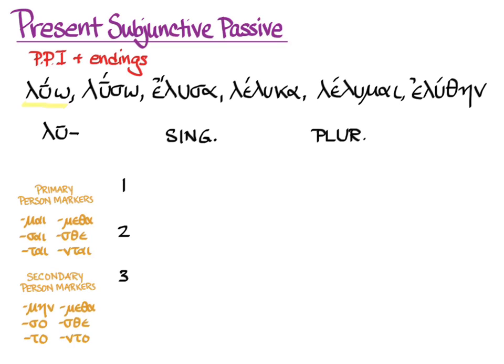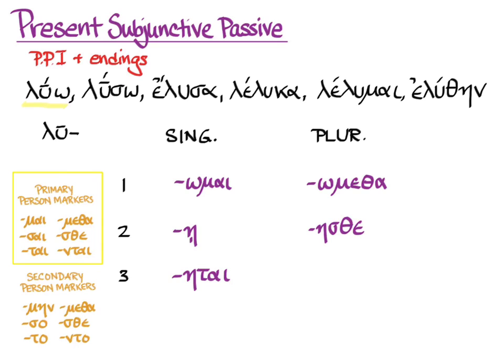Since we associate the subjunctive with the primary sequence, we'll be using those primary person markers. So here are your endings: o-mai, a, a-tai, o-metha, a-stha, o-ntai. You've got those passive primary person markers on the long vowels — omega and eta — of the present subjunctive.